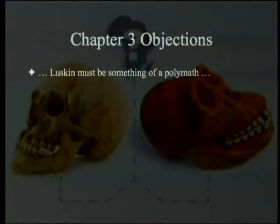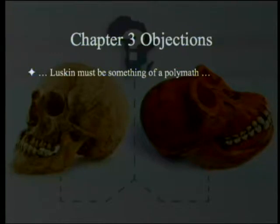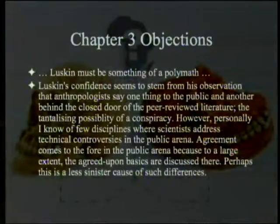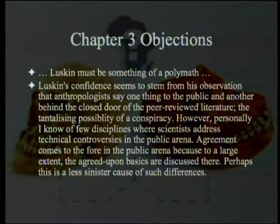The fact of the matter is that anybody can do this, and everybody's in training at some time. McBride's comments start out by saying Luskin must be something of a polymath — of course, that's a little dig that Luskin doesn't know what he's doing. He never got a PhD in evolutionary biology; actually I think he doesn't have a PhD at all. He does have an MA in science and I think a law degree. Luskin's confidence seems to stem from his observation that anthropologists say one thing to the public and another behind closed doors — the closed door of the peer-reviewed literature.